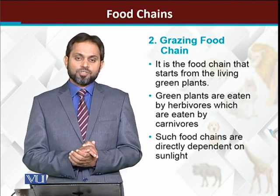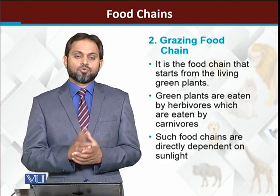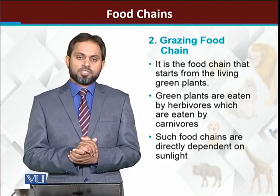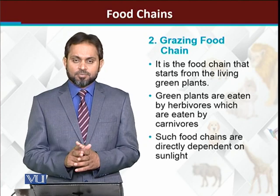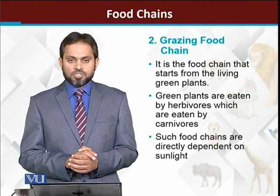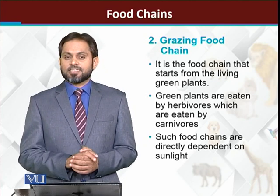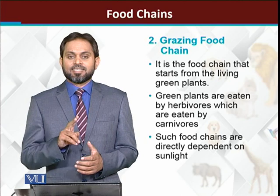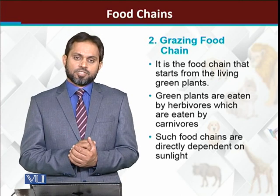Food chains are basically of two types. The first one is the grazing food chain and the second one is the detritus food chain.